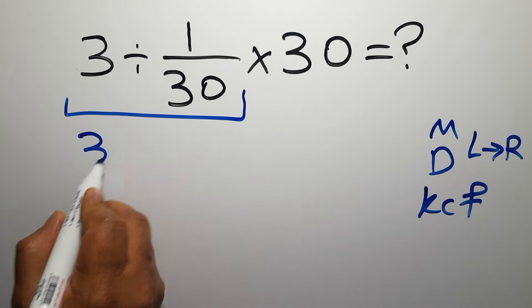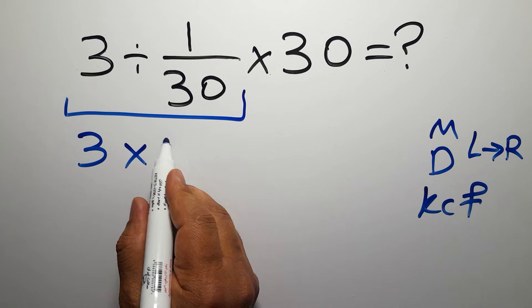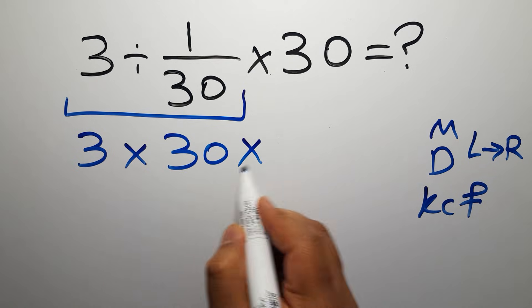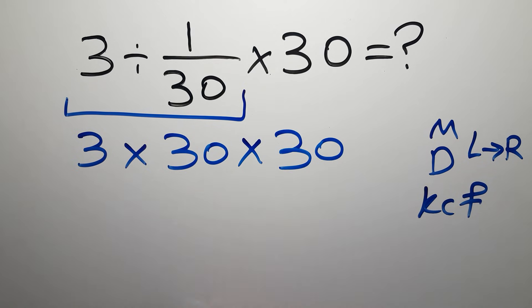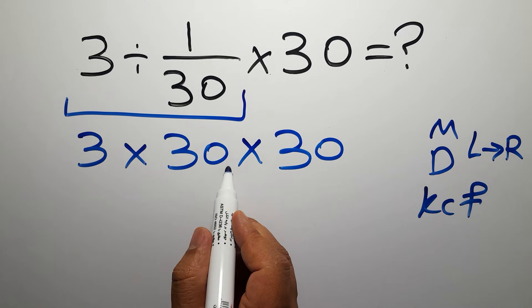So we can write 3 times 30, and again here we have times 30. 3 times 30 gives us 90.